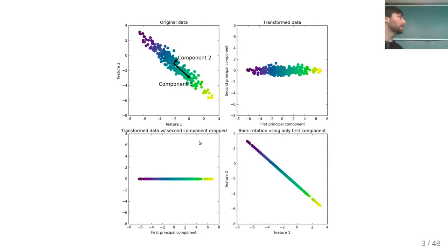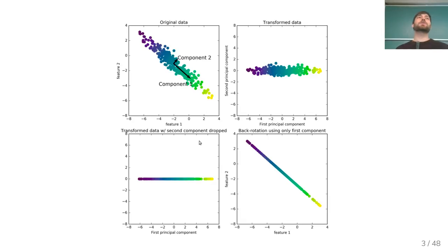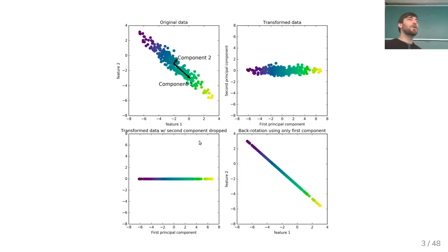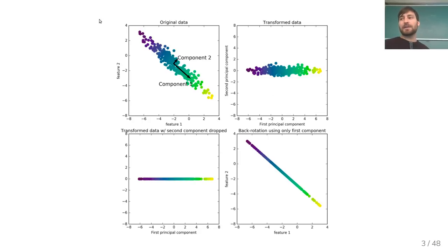One application of PCA is dimensionality reduction for compression. If you have a lower-dimensional space, you can have a smaller model and maybe a more interpretable model. It's often also seen as denoising — you can think of the main signal only being along one direction, with the other dimension being noise, and removing that noise dimension.